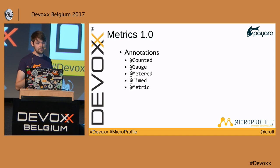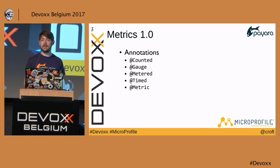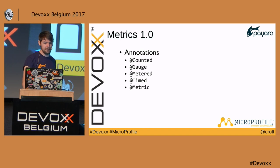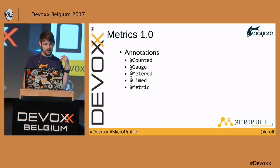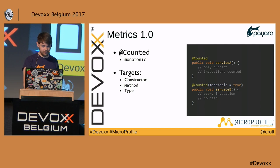Metrics 1.0 is a closely related API with many different annotation types. You don't have to use annotations — there is a programmatic way too. Those familiar with Prometheus will recognize some of these: counters show totals, a gauge goes up and down, meter shows throughput, timed shows timings, and @Metric lets you inject metrics programmatically.